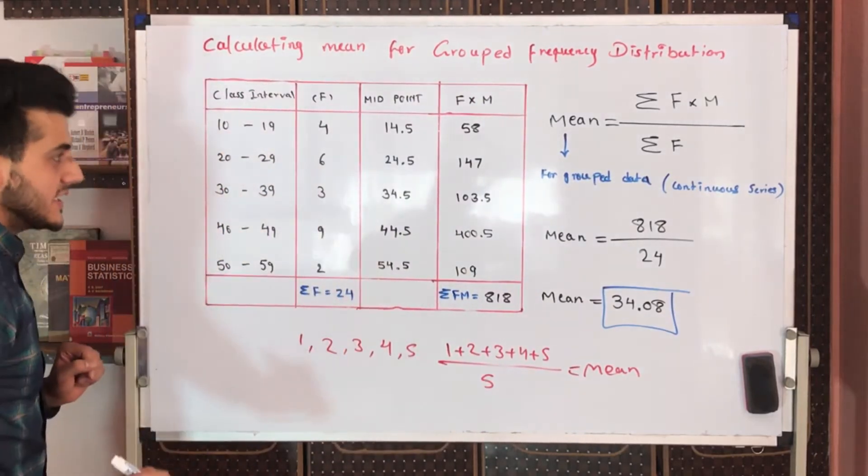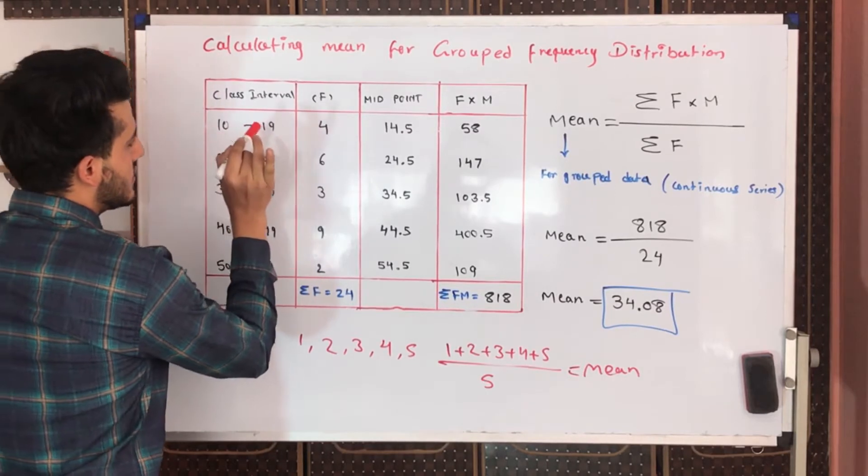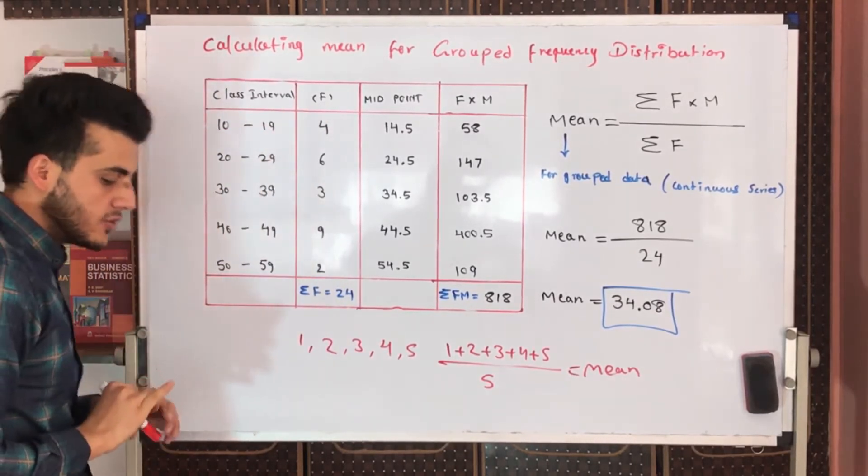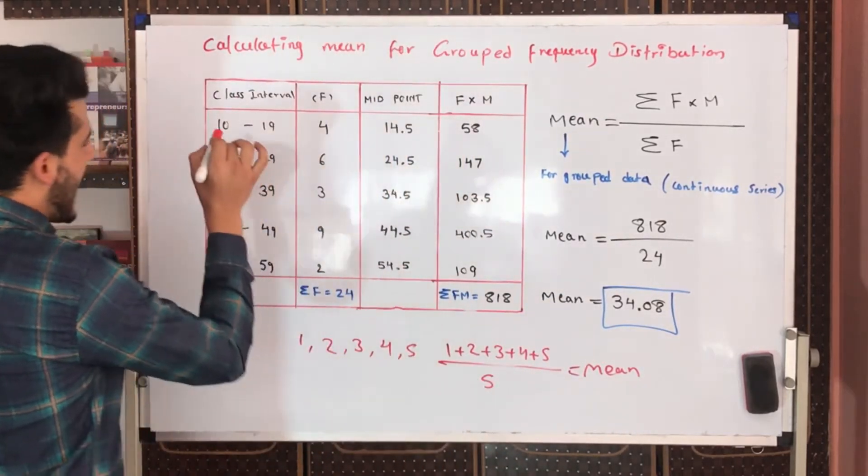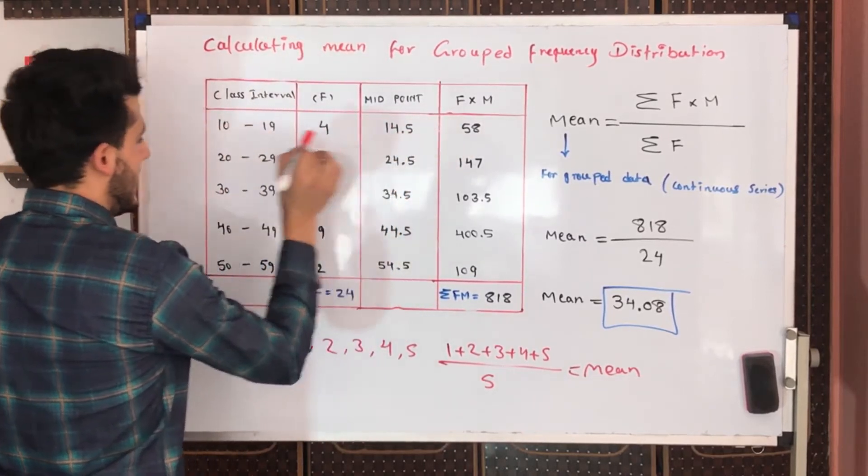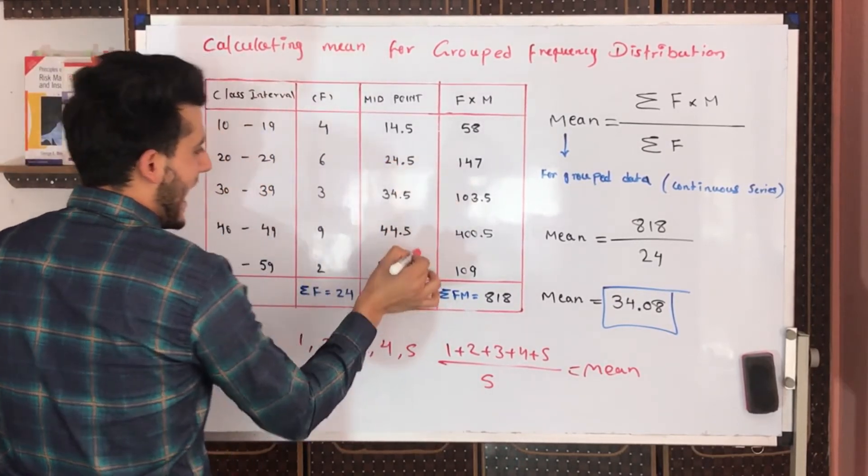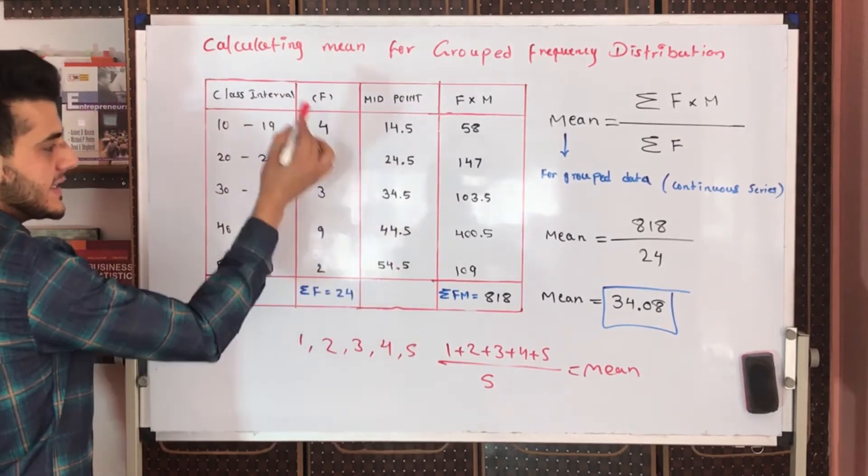How will we find a midpoint? As we studied earlier, we add the lower limit plus upper limit divided by 2 - we take average of them and this would be the midpoint. If we add 10 plus 19 divided by 2, the result is 14.5. 20 plus 29 divided by 2 equals 24.5, and all midpoints are in this format.